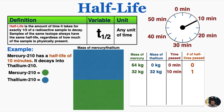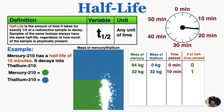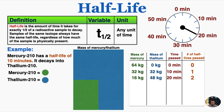So the half-life is always how long it takes for half of the sample to decay. So if I allow another 10 minutes to pass, half of the remaining sample is going to decay. So now after 20 minutes I only have 16 kilograms, because that's half of 32, which means 48 kilograms are now thallium. So two half-lives have passed.